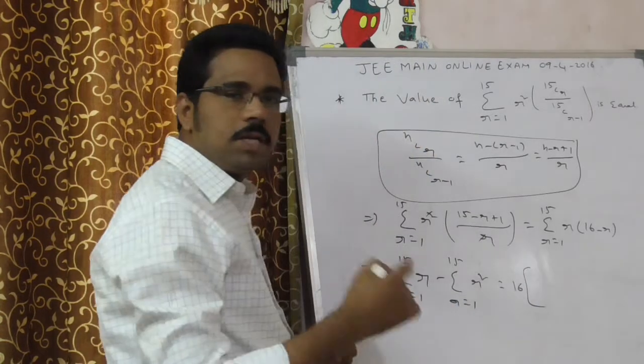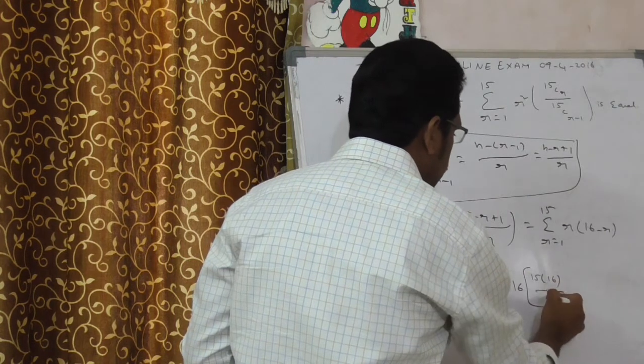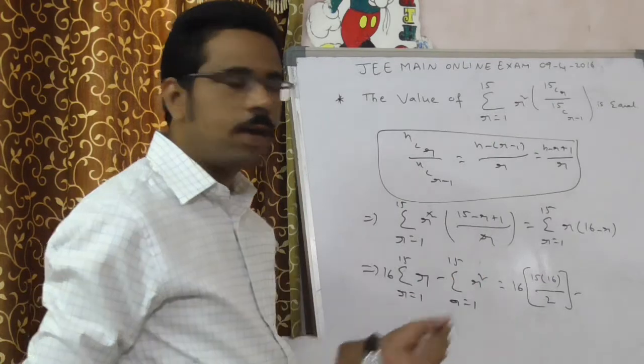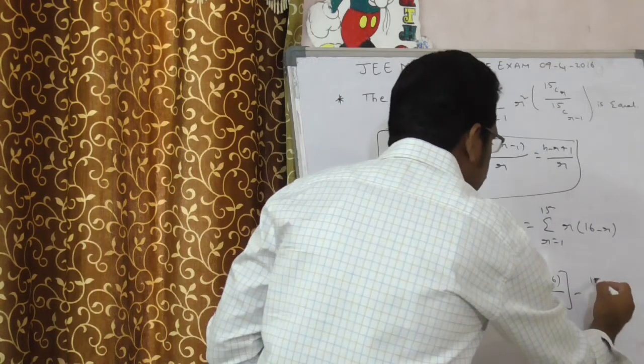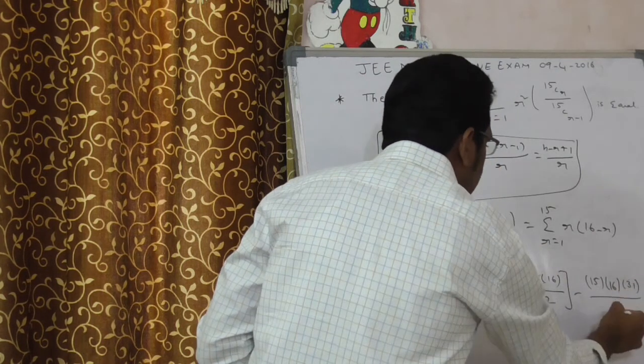Here you get n of n plus 1 by 2. First summation. n is 15, n plus 1, 15 plus 1, 16 by 2 minus. Second summation is r square. Therefore, n of n is 15, n plus 1, 16. 2n plus 1, 13 by 6.